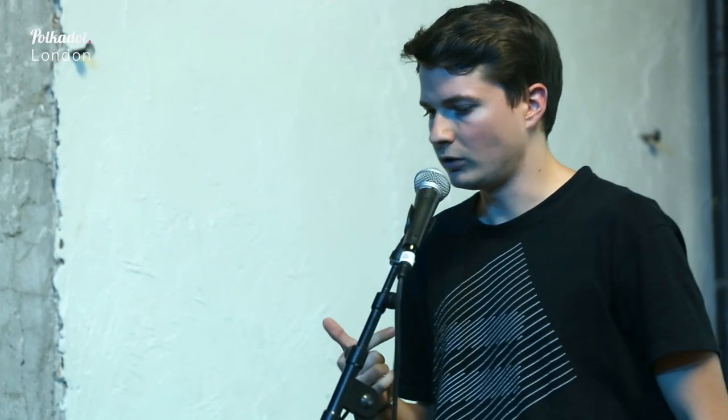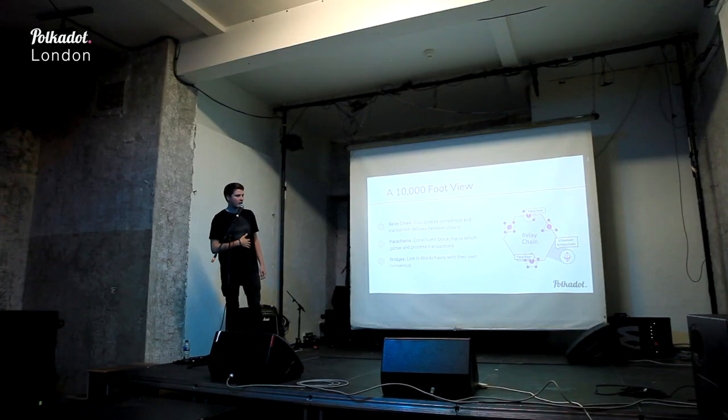Bridges lead back to what I was saying about supporting the past — you want to be able to support chains that already exist. It's very unlikely that the Ethereum community or Bitcoin will just become a parachain; they already have their own consensus and are very secure. What you can do is build what we call bridges — a piece of technology that lets you link a chain into the Polkadot network while keeping their own security guarantees and their own consensus.